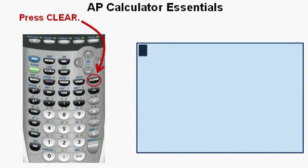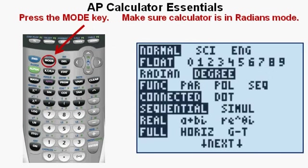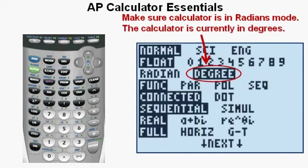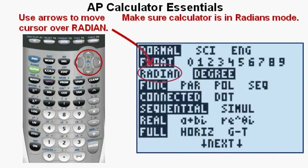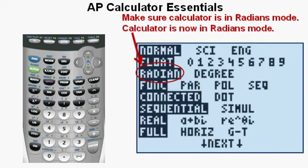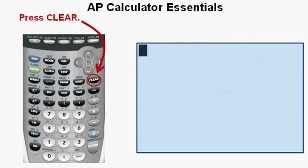In calculus, we need to have our angles set to radians rather than degrees. To check that, press the MODE key. We see the calculator is in degrees mode on the third line down. Use the arrows to move the blinking cursor over radian on the third line and press ENTER. The calculator is now in radian mode. Press clear again to get to the home screen.